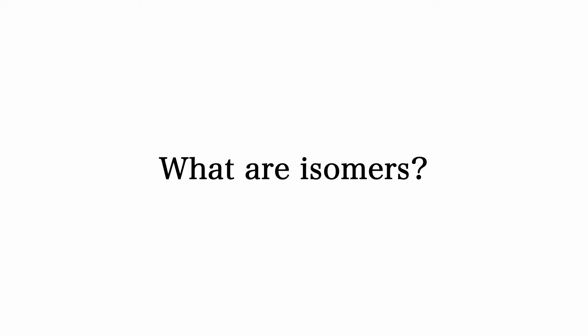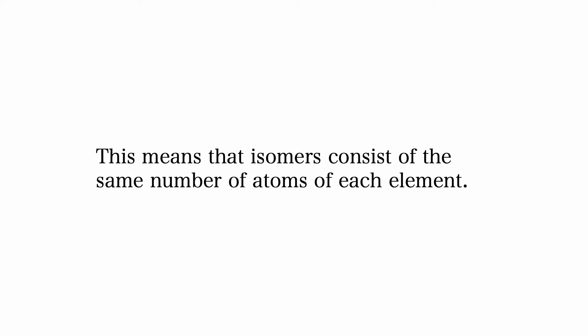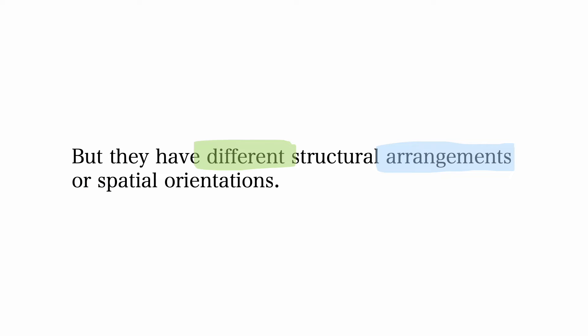What are isomers? Isomers are molecules that share the same molecular formula. This means that they consist of the same number of atoms of each element, but they have different structural arrangements or spatial orientations.